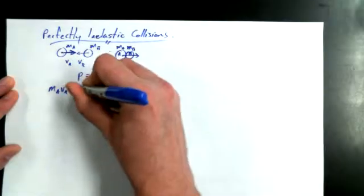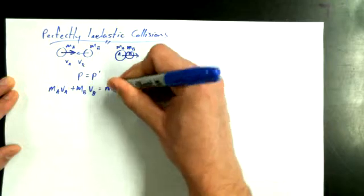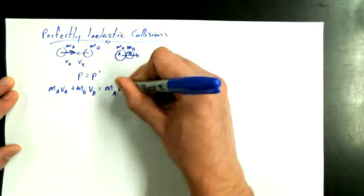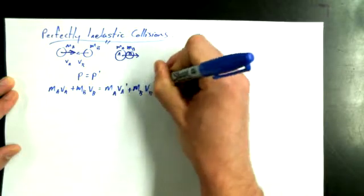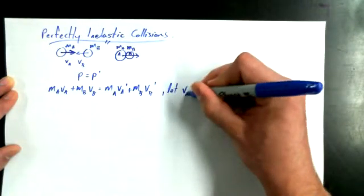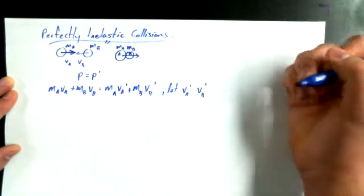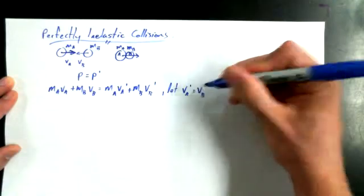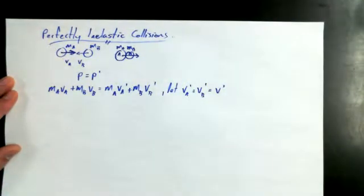Momentum is always going to be conserved. So the way I could write this out for momentum conservation is that MA VA plus MB VB is equal to MA VA primed plus MB VB primed. But in this case, I could say, what can I say about VA VB primed? Same. So I'm just going to rename them V primed, because it's the final velocity of the system.